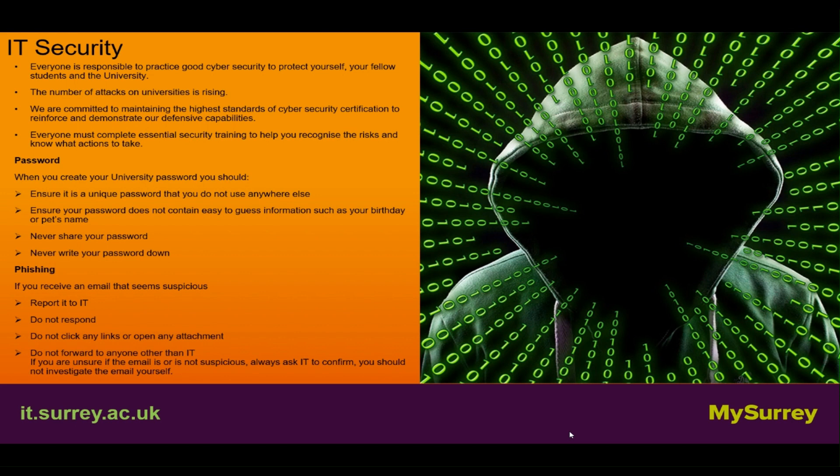Phishing: if you receive an email that seems suspicious, report it to IT using the report phish button in your Outlook. Do not respond, do not click on any of the links or open any attachments, and do not forward it to anyone other than IT. If you are unsure whether an email is suspicious, always ask IT to confirm — you should not investigate the email yourself.